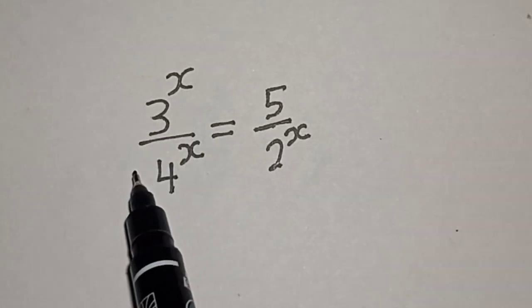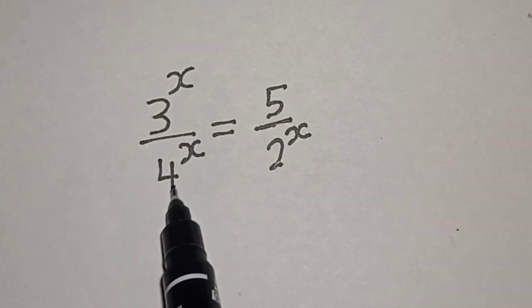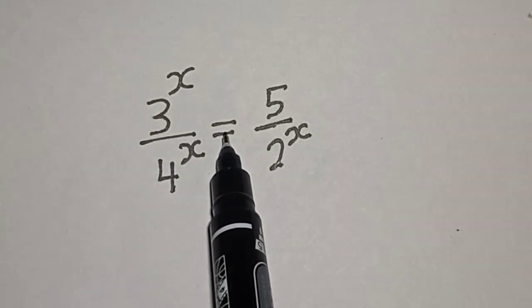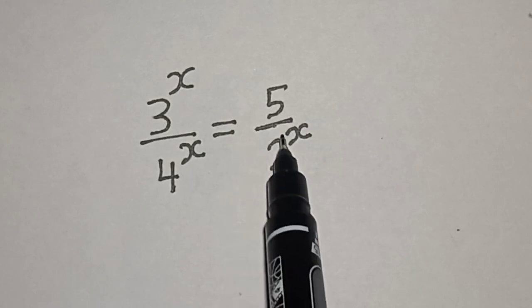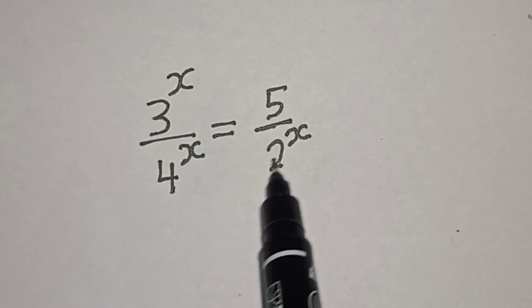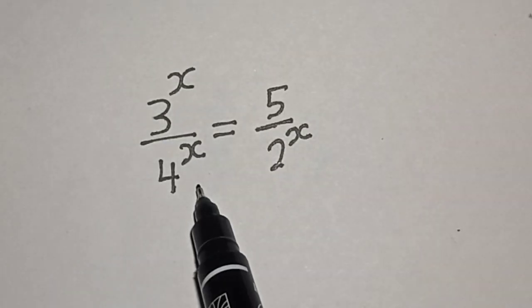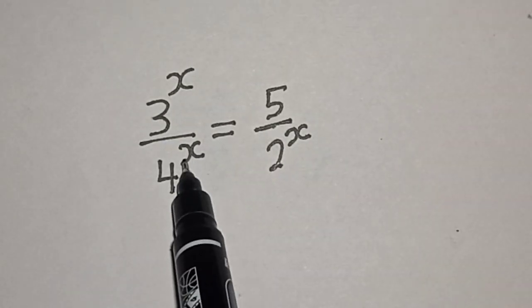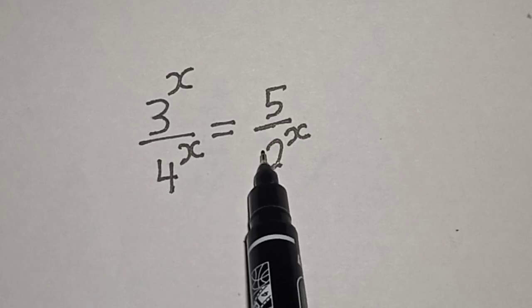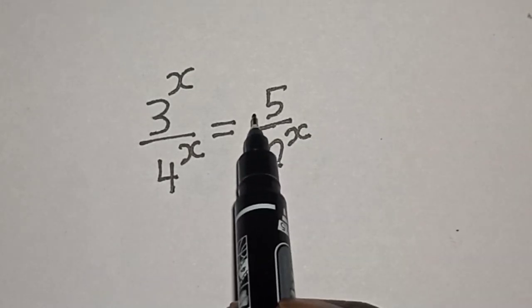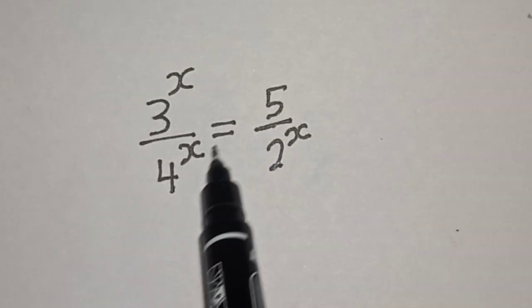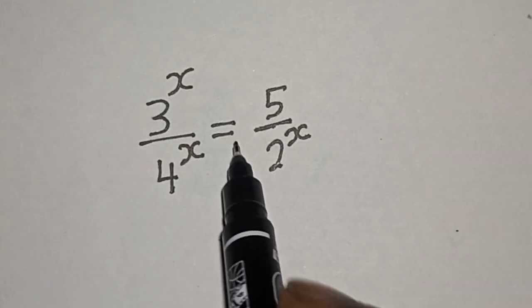3 raised to power x divided by 4 raised to power x is equal to 5 divided by 2 raised to power x. Hi everyone, welcome to my class. In this class, we want to find the value of x from this equation.